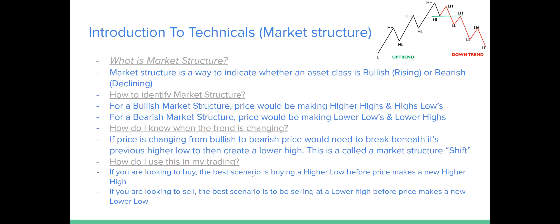How do I use this in my trading? If you're looking to buy, the best scenario is buying at a higher low before price makes a new higher high — buying at the lowest point before price expands. Every time it makes a new higher low, I should be looking to buy before price breathes out. Vice versa, if looking to sell, I should be selling at the lower highs — every time price breathes in for the retracement. We don't want to be selling at the lowest point; we want to sell at the highest point in the downtrend, and buy at the lowest point in the uptrend.